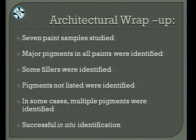To wrap up architectural paints: seven paints were analyzed. The major pigments in most paints were identified. Some fillers were also identified, like mica. Pigments listed on the can, most notably the phthalocyanine pigment, were identified. In some cases, multiple pigments were identified. Once again, all these paints were identified in situ under the Raman microscope.